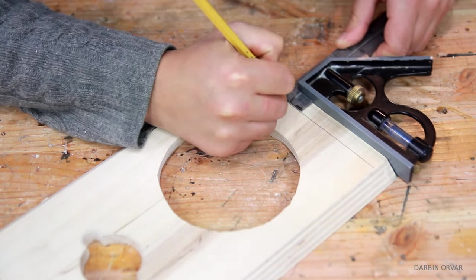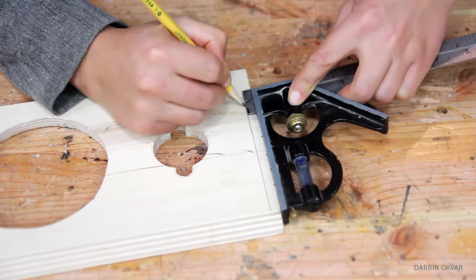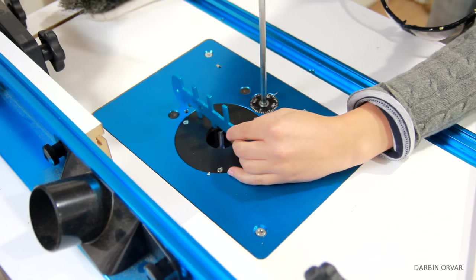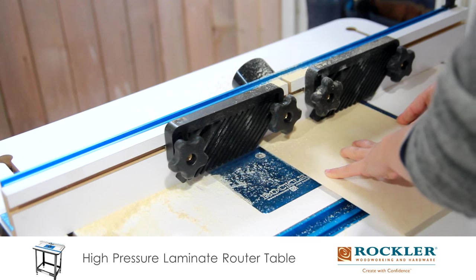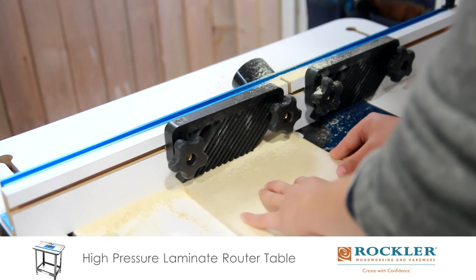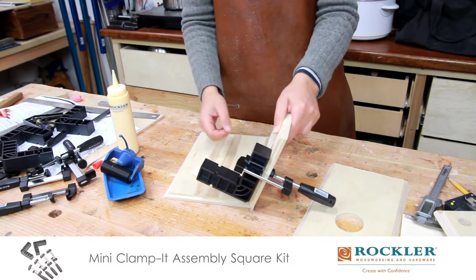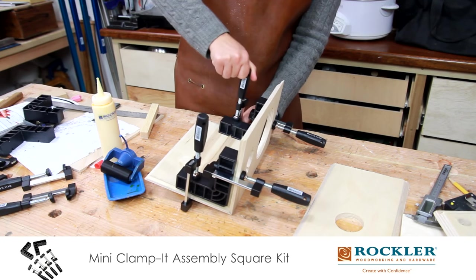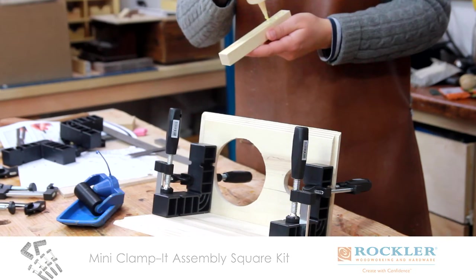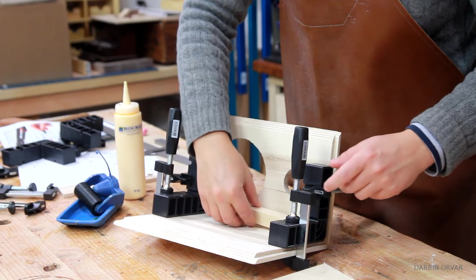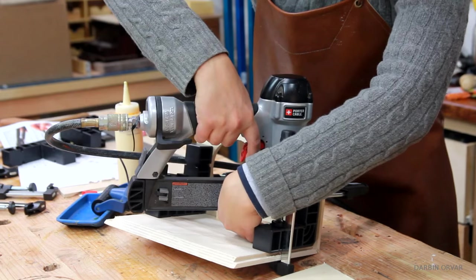To fit the bottom and the top in, I made some rabbets on the router table. Then it was simply a matter of gluing the pieces together. Using corner clamps is really helpful when you want to make sure everything is square. I also added a block in the corners which I glued and stapled in for additional stability.